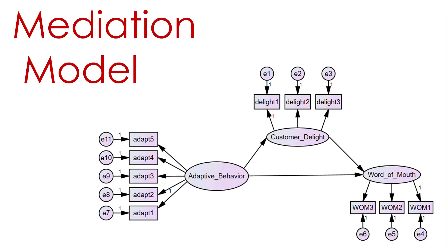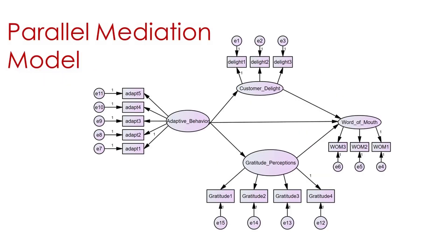What if you had multiple mediators? That's called a parallel mediation model. Here, the predictor adaptive behavior goes to two different constructs acting as mediators — customer delight going to word-of-mouth, but also gratitude perceptions. It's called parallel because it splits, and you're assessing whether the indirect effect goes through customer delight and also whether it goes through gratitude perceptions, with both leading to word-of-mouth.